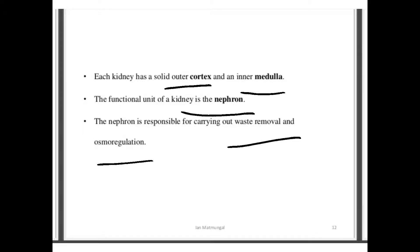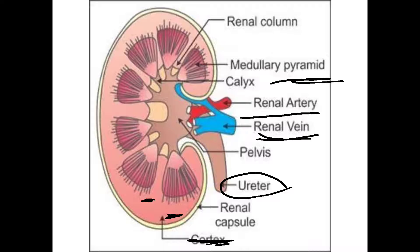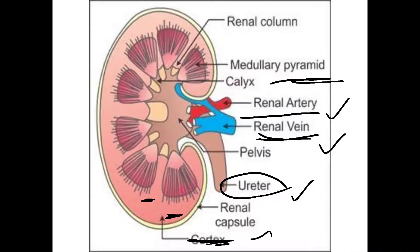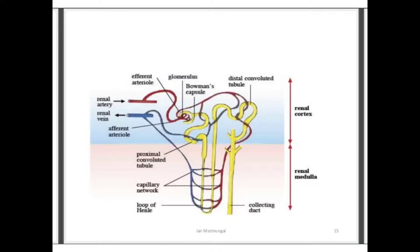The renal artery brings blood from all body organs towards the kidney, and the renal vein collects the filtered blood from the kidney. The ureter is the passage for excess water, which travels to the bladder. There are cortex and medulla regions, and millions of nephrons are present in the kidney.